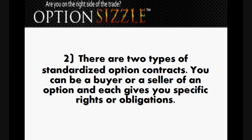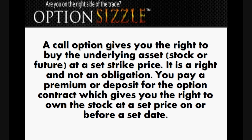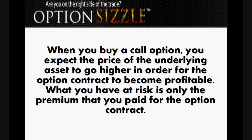There are two types of standardized option contracts. You can be a buyer or a seller of an option, and each gives you specific rights or obligations. To keep it simple, I will explain only the concept of buying the two types of options. A call option gives you the right to buy the underlying asset at a set strike price — it is a right and not an obligation. You pay a premium or deposit for the option contract, which gives you the right to own the stock at a set price on or before a set date. When you buy a call option, you expect the price of the underlying asset to go higher in order for the option contract to become more profitable.